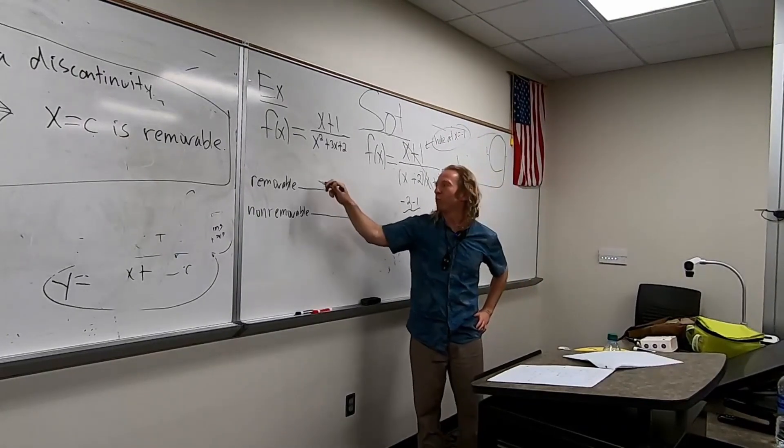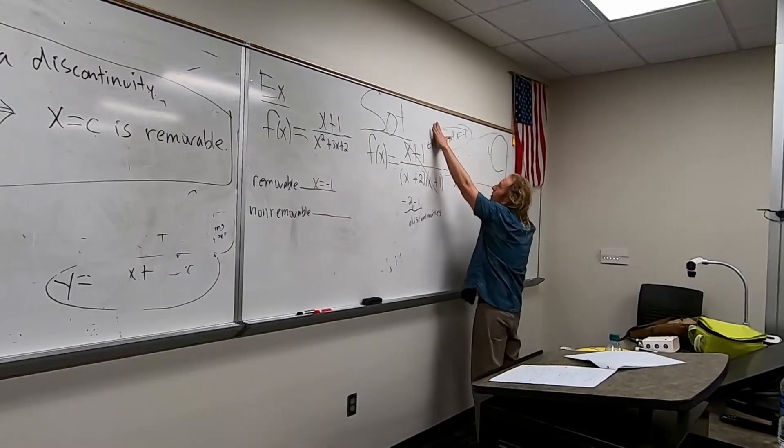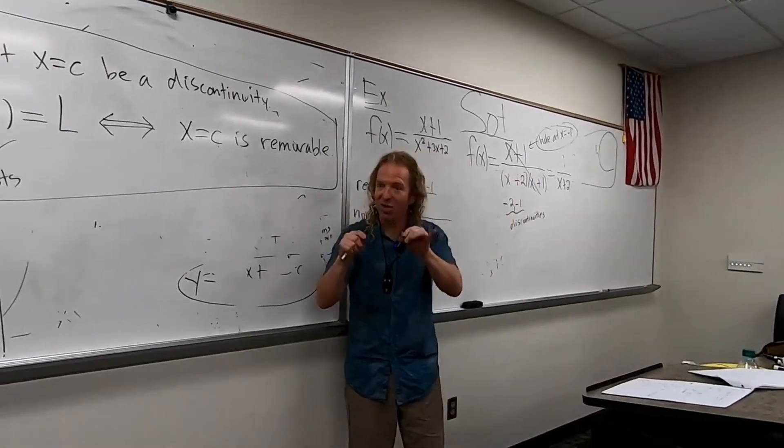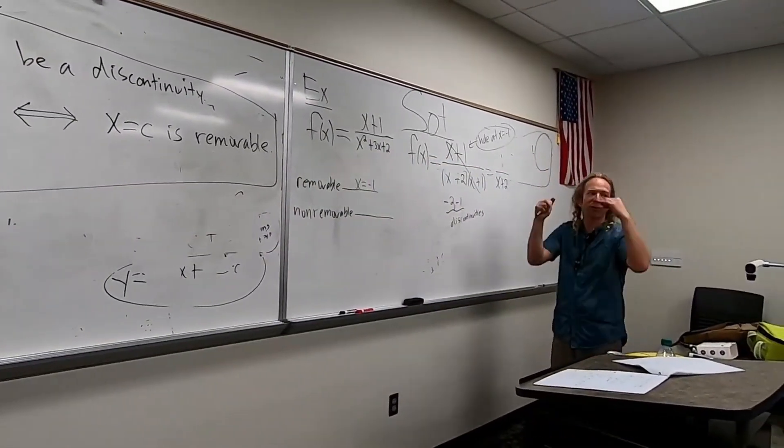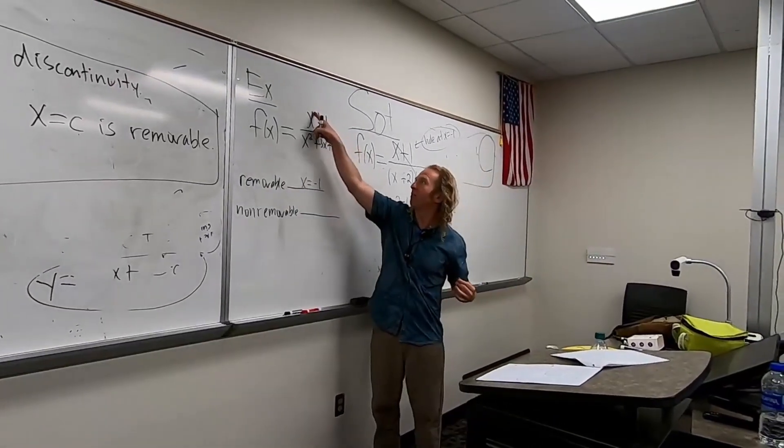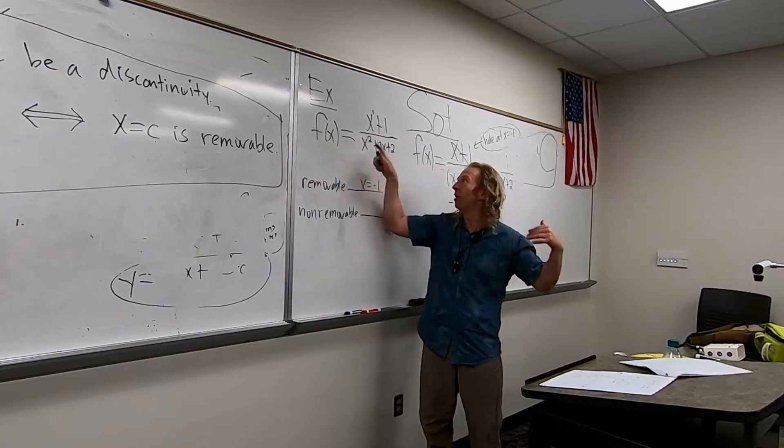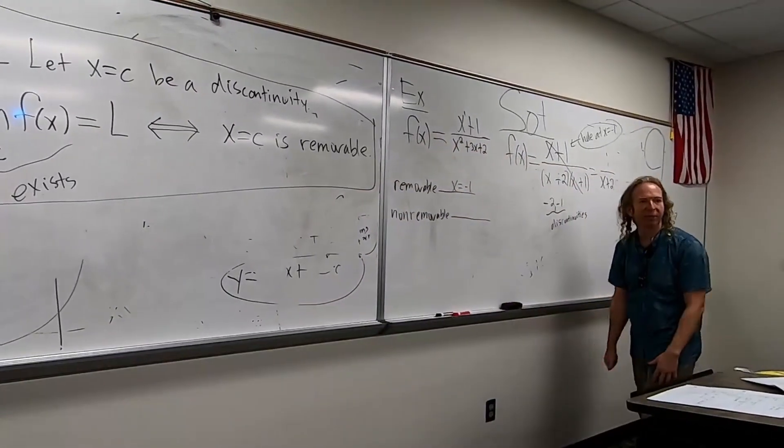Holes are always removable. So holes are always removable. So holes in a rational function, let me take that back. Holes in a rational function are removable. But what's a rational function? A polynomial over a polynomial, right? So you have powers of x and everything's a whole number over powers of x and everything's a whole number. That's what a polynomial is, okay? It's like x cubed is a polynomial. Square root of x, not a polynomial, right?